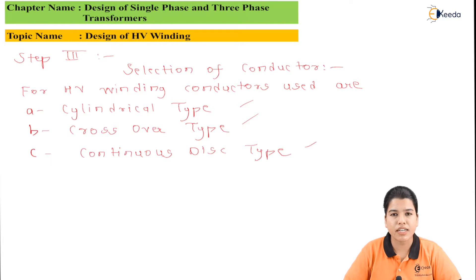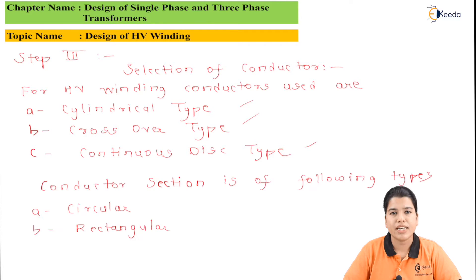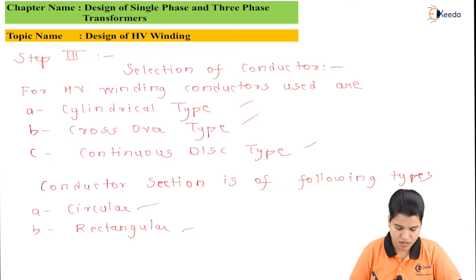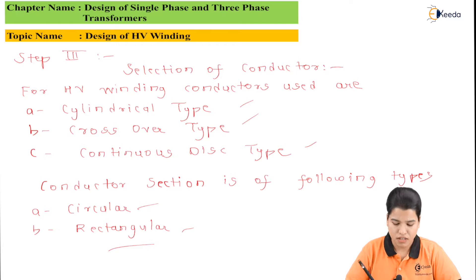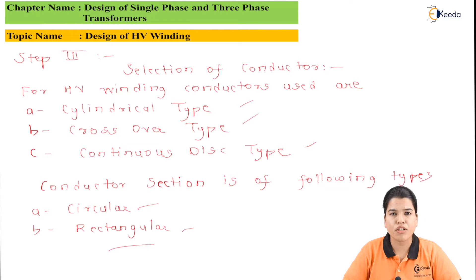Depending upon the type of winding, the conductor cross-section can be of two types: circular and rectangular. The circular cross-section is used for small and medium transformers, whereas the rectangular cross-section is used for large transformers.